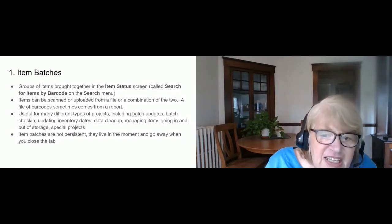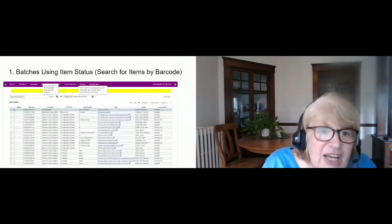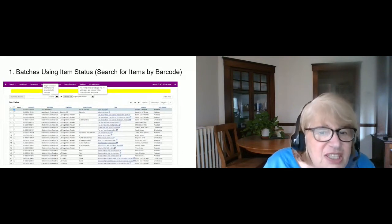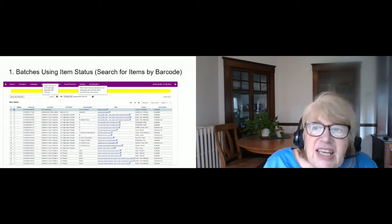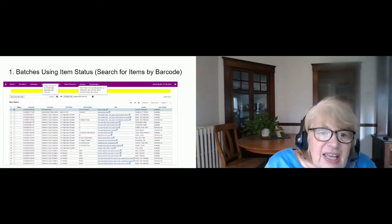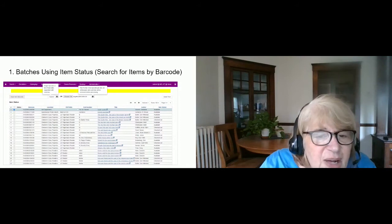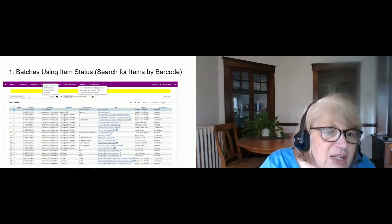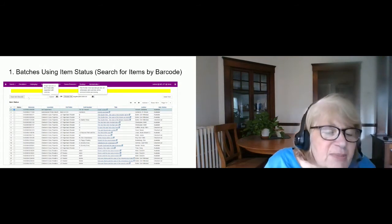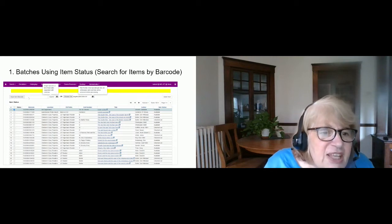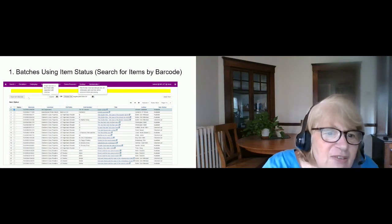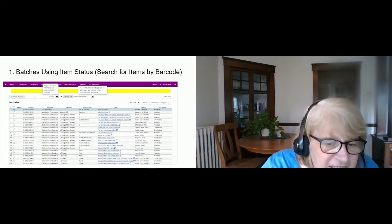The important thing to always remember about item batches is: you close that tab and they're gone. You can get to item batches via the Item Status screen — the 'IT' screen — which you access from the Search menu under 'Search for Items by Barcode.' Maybe the most common way to create a batch is to have a pile of books and a scanner and just scan them, since you're doing something physically with the books — relabeling, moving to a different section, putting them on display.